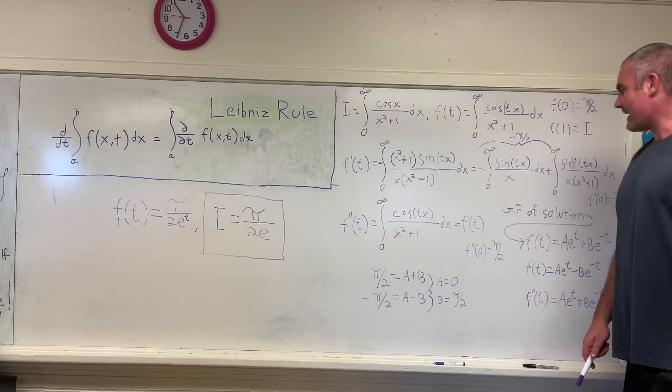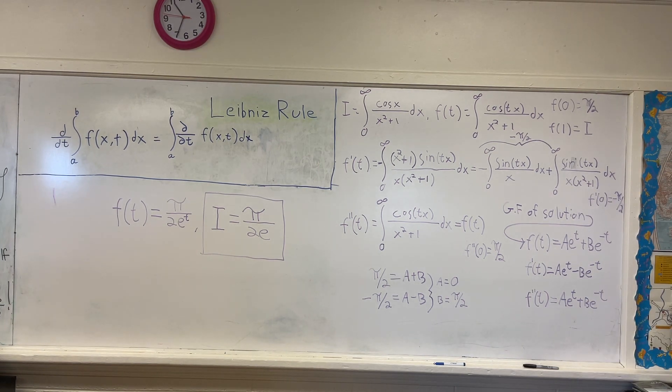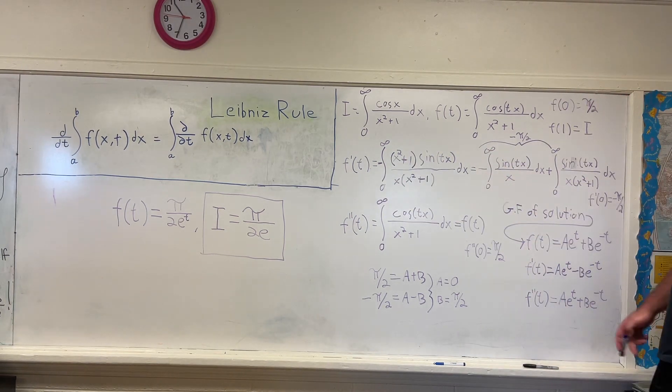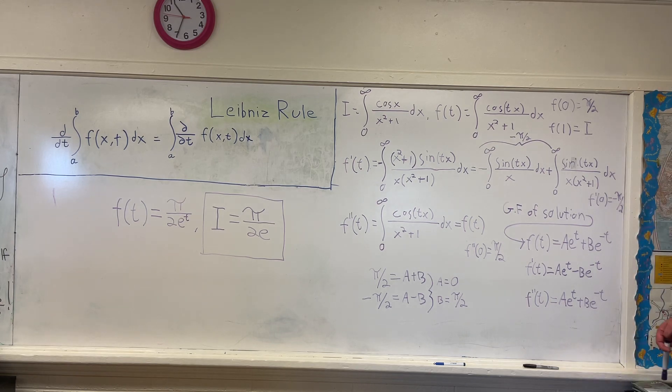If anybody has a good explanation as to why it's correct to plug in 0 into this equation when determining f prime of 0, as opposed to plugging it in this one, I would really appreciate it if you leave it in the comments. I'm going to try to research that myself and maybe tack on an addendum to this video at a later date explaining why it's correct to choose f prime of 0 equaling negative pi over 2. But for now, this is the best I got, so I hope you enjoyed that.